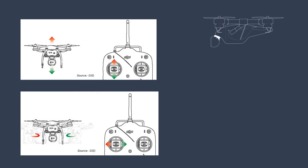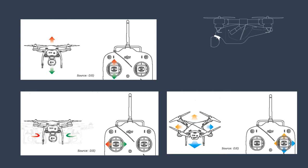For a multicopter, the left control has two functions. Pushing up and down makes the drone go up or down. Left and right makes the drone spin left or right. The right control is the directional control — forward, back, left, and right.